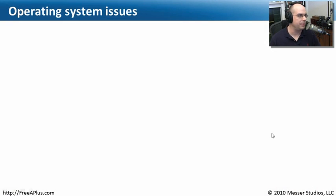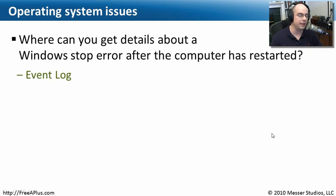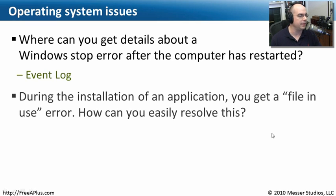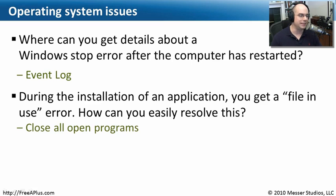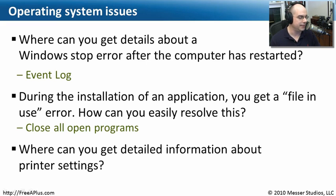For review: where can you get details about a Windows stop error after the computer has restarted? A great place to go is your event log — it stores as much information as possible about what occurred. During the installation of an application you get a file-in-use error — how do you resolve it? Close all other open applications before installing. If you close them out, you'll resolve the issue with a file that can't be replaced because it's still open.